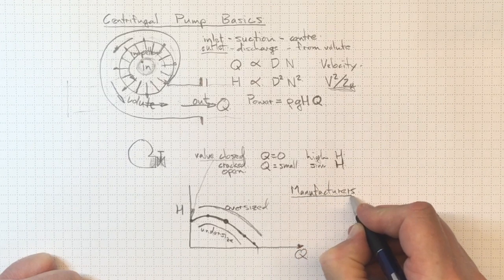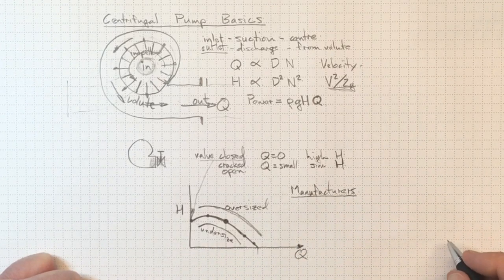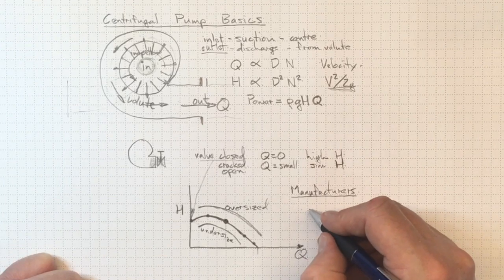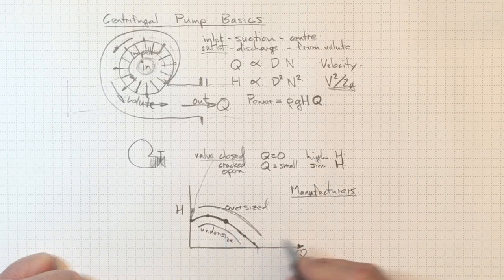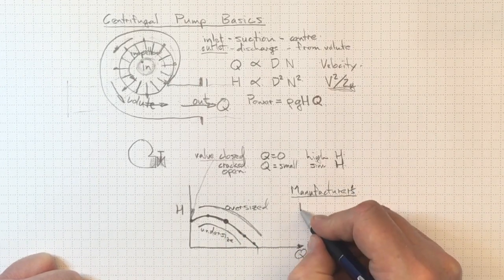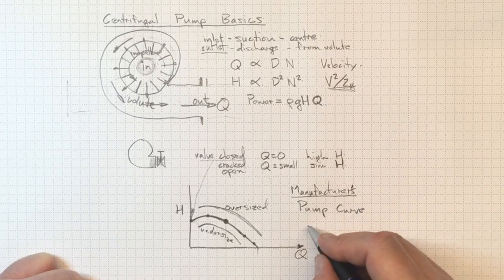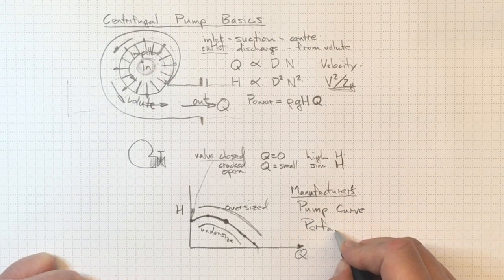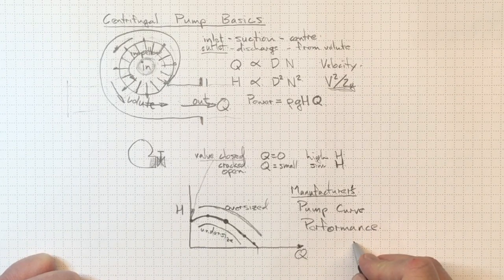And the manufacturers will provide curves that say, this is the performance characteristic for our pump. And they should be able to guarantee them for you if you buy their pump and put it into service. So we will always go to the manufacturer's pump curve in order to get the actual performance information that we're looking for to base our designs on.